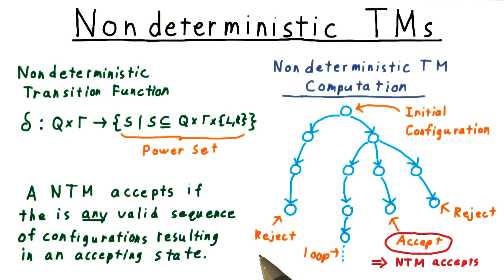Naturally, it also rejects only when every branch reaches a reject state. If there's a branch that hasn't rejected yet, then we need to keep computing in case it accepts. Therefore, a non-deterministic machine that never accepts and that loops on at least one branch will loop.